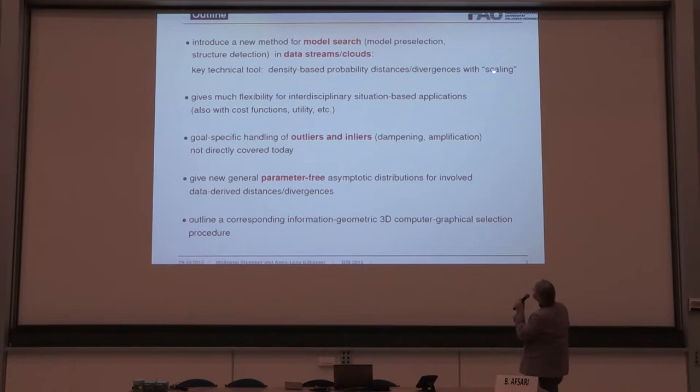So this scaling gives much flexibility for interdisciplinary situation-based applications. You can include cost functions, utility, whatever you like. You can also handle in a very nice way outliers and inliers. I'll show you some asymptotic distribution of the concerning distances, and we also show you a computer 3D implementation.